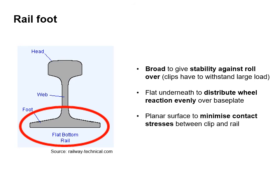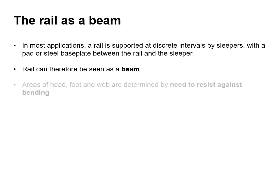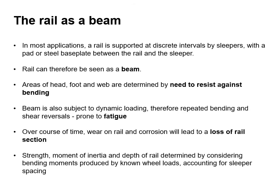The rail foot is broad and gives stability against rollover. The flat underside distributes wheel reaction evenly over the base plate. The planar surface minimises contact stresses between the clip and the rail. In most applications a rail is supported at discrete intervals by sleepers, with a pad or steel base plate between the rail and sleeper. The rail can therefore be seen as a beam — areas of head, foot and web are determined by the need to resist bending. The beam is also subject to dynamic loading, with repeated bending and shear reversals, making it prone to fatigue.